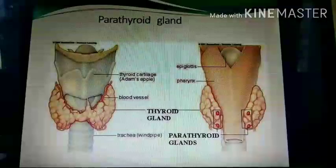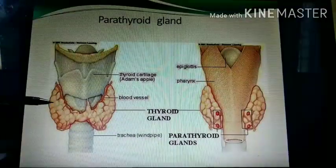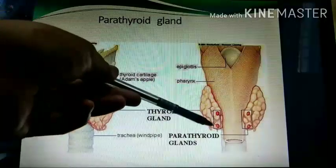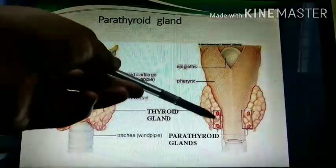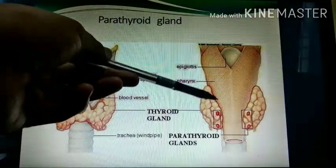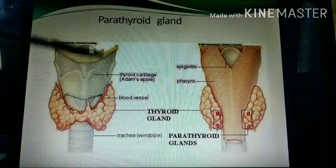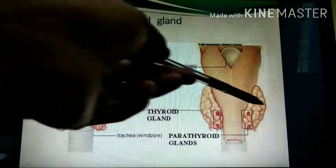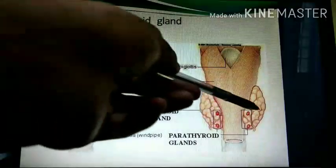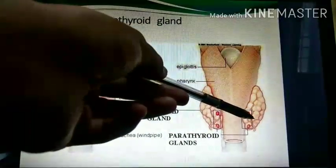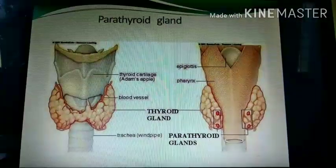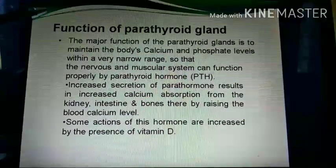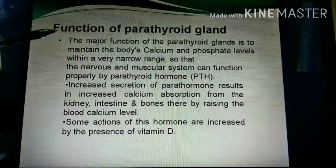In this diagram, the thyroid gland is shown with the four parathyroid glands situated on the back side. This is the anterior view and this is the posterior view of the thyroid gland. There are four parathyroid glands situated behind the thyroid gland.